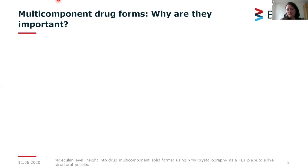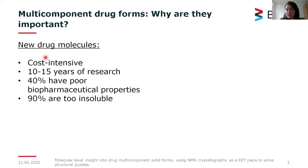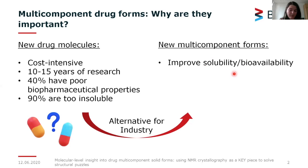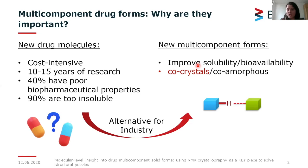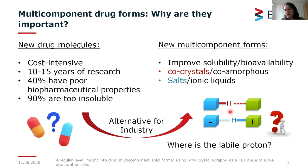Why are multi-component drug forms important? As most of you already know, launching new drugs in the market is cost-intensive, takes between 10 to 15 years of research, and after those processes, 40% of the approved drugs have poor biopharmaceutical properties and 90% are too insoluble. To overcome this problem and improve solubility and bioavailability, the pharmaceutical industry is very much interested in preparing new multi-component forms of already approved drugs, including co-crystals, co-amorphous forms, salts, and ionic liquids. The key difference between these is the location of the labile proton.